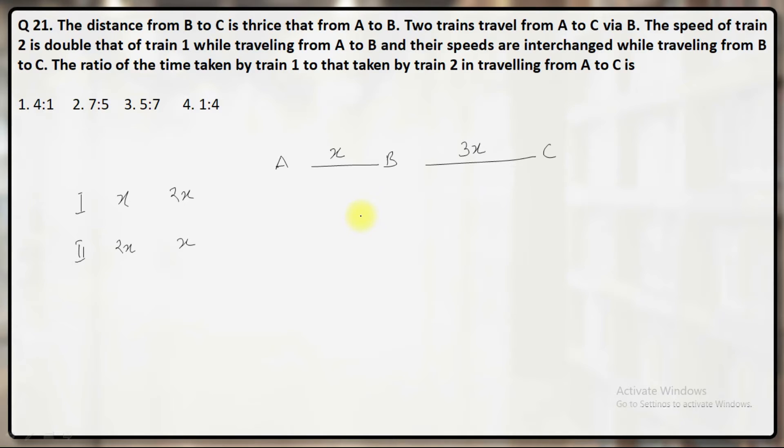So ratio of the time taken by train 1. Train 1, I will take it equal to Y. Sorry, I will have to take a different variable here.